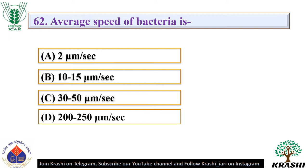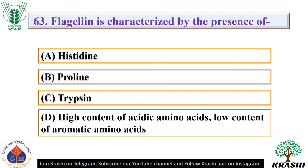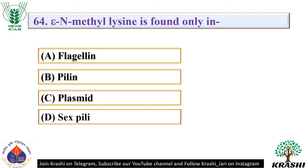Question number 62: Average speed of bacteria is. The correct answer is option C — 30 to 50 micrometers per second. Question number 63: Flagellin is characterized by the presence of. The correct answer is option D — high content of acidic amino acids and low content of aromatic amino acids. Question number 64: Epsilon N-methyl lysine is found only in. The correct answer is option A — flagellin.